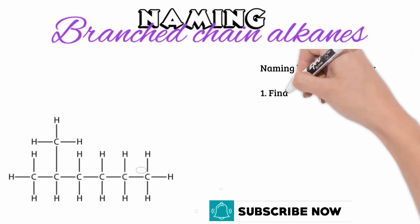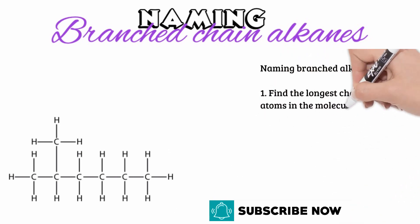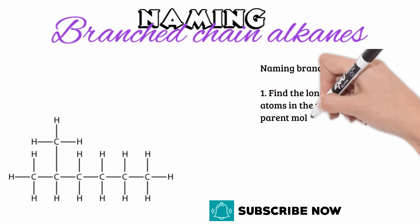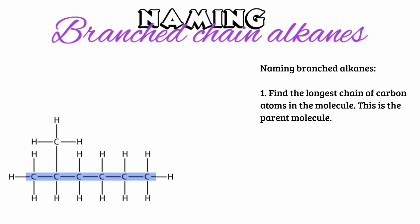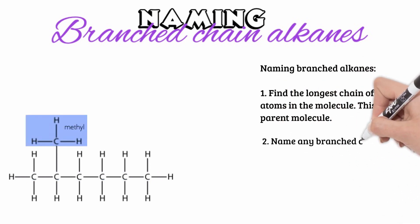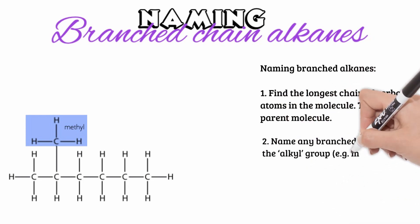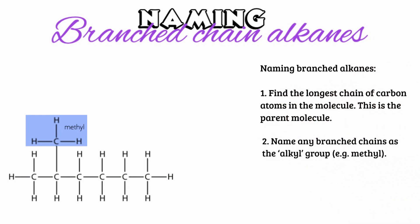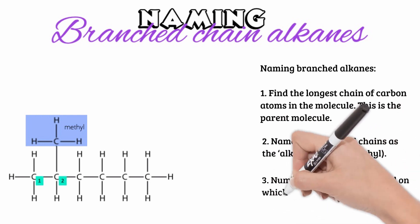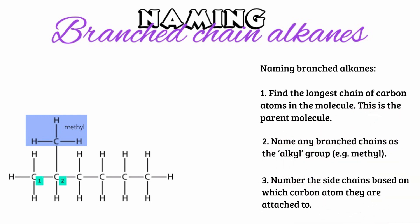When naming branched alkanes or hydrocarbons, we use the following steps. First, find the longest chain of carbon atoms in the molecule — this is called the parent molecule. Second, name any branches or side chains as the alkyl group. For example, if a methane group was attached to the parent molecule, we would name it methyl.